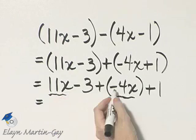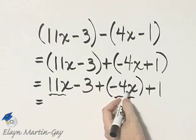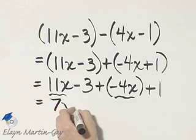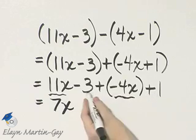And so what is 11 plus a negative 4 or 11 minus 4? It is 7, and I have 7x, and then I have negative 3 plus 1.